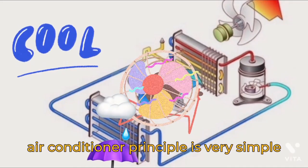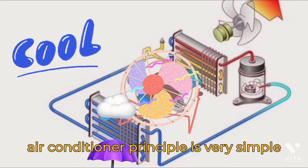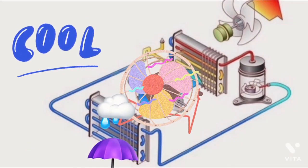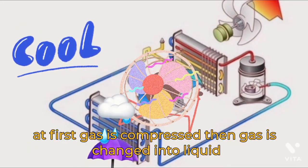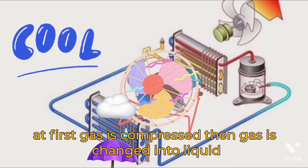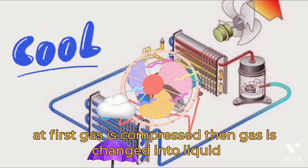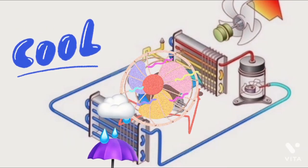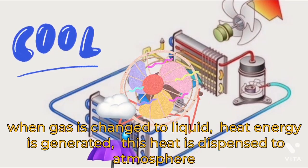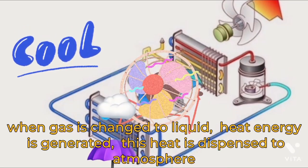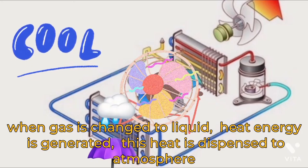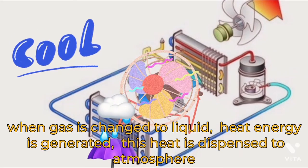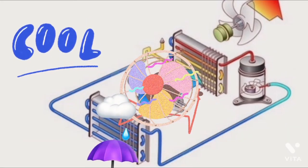Air conditioner principle is very simple. At first, gas is compressed, then gas is changed into liquid. Liquid heat energy is generated, and this heat is dispensed to the atmosphere.